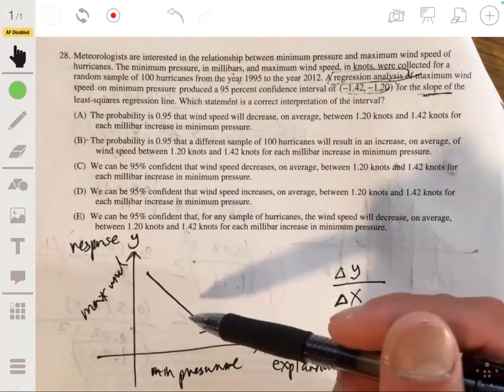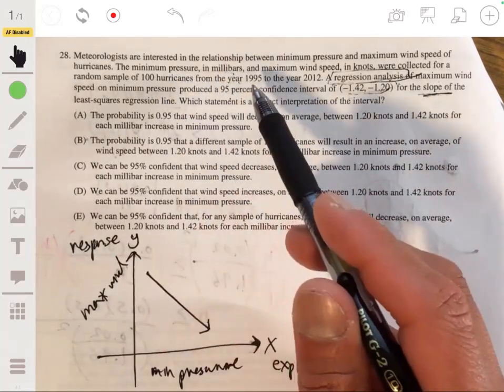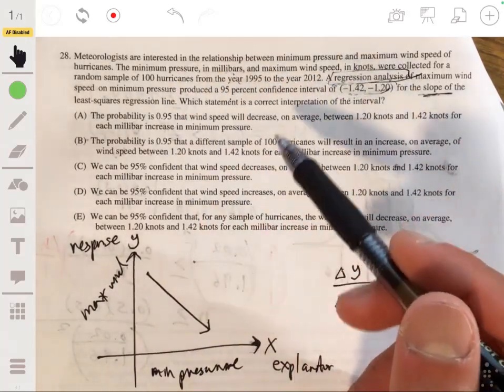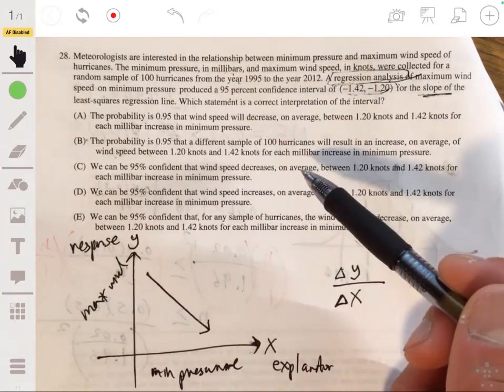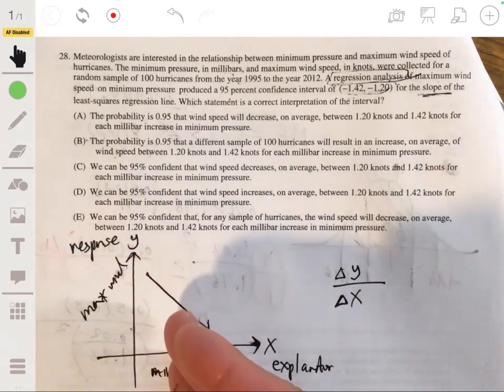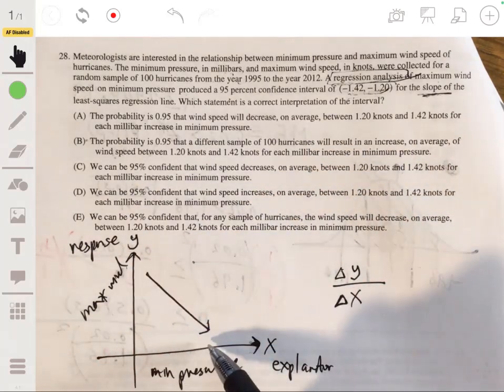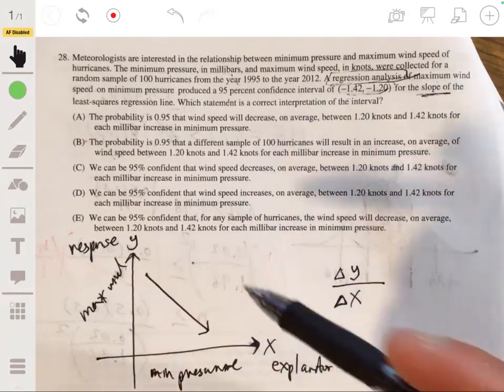And again, I can't really say a trick for how you figure this out. And again, it doesn't really actually matter, because usually that's not gonna be an issue. The key thing you're looking for is that as the minimum pressure increases, max wind decreases. They have a reverse or inverse relationship.